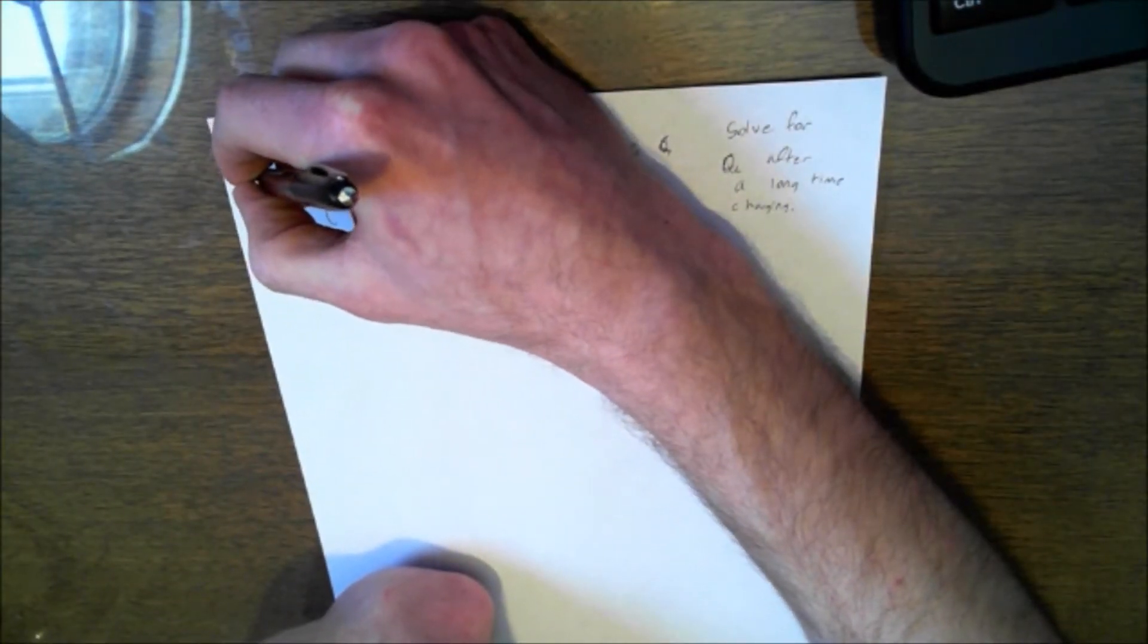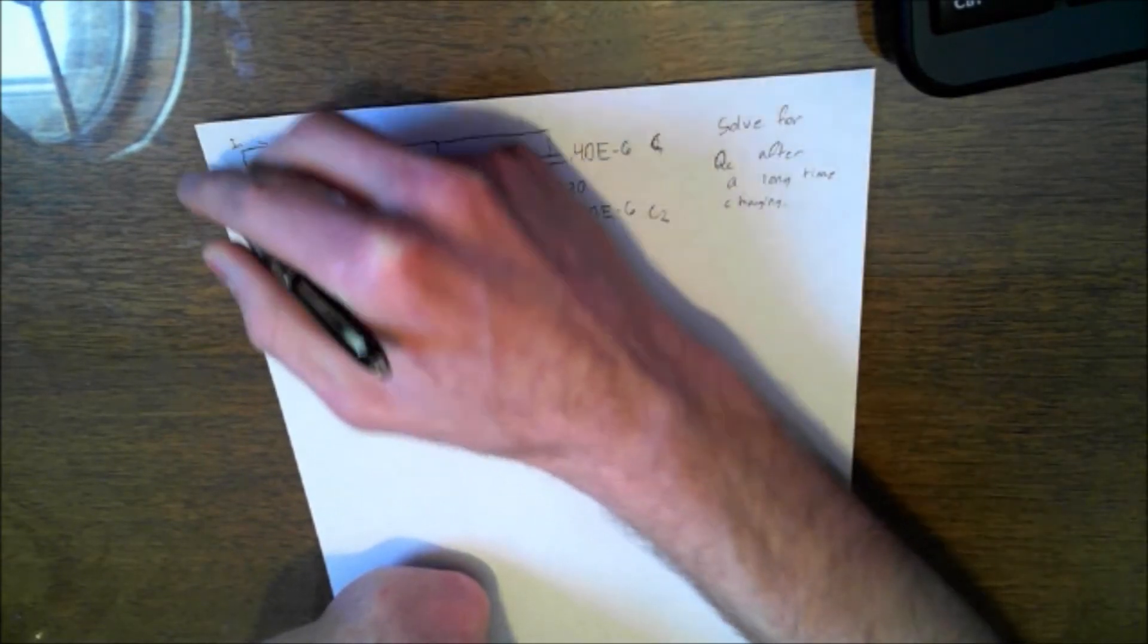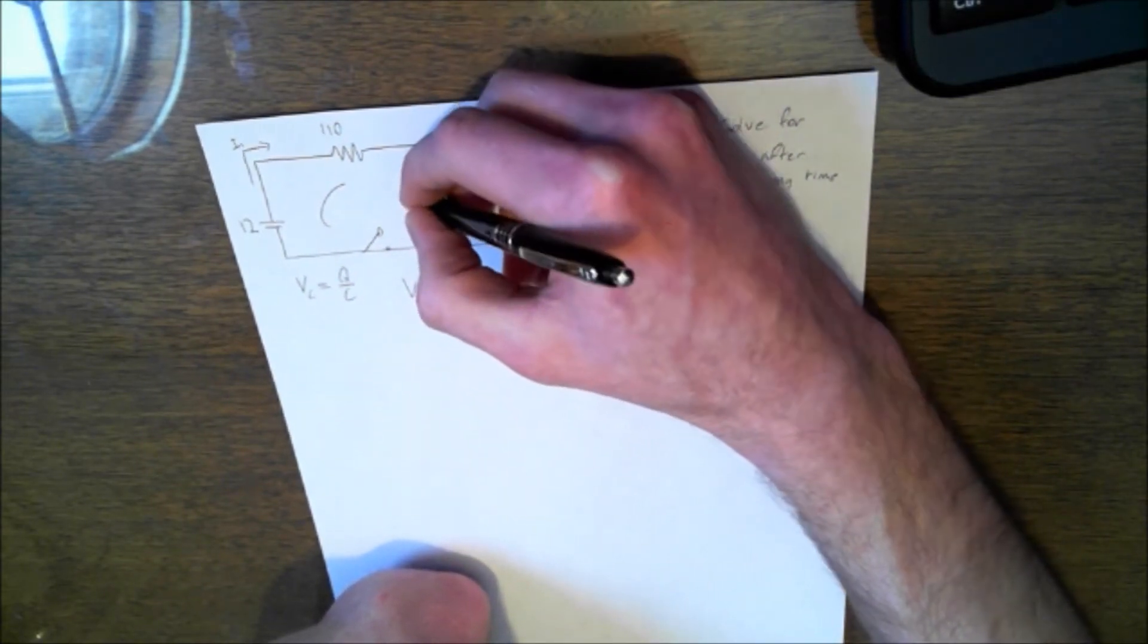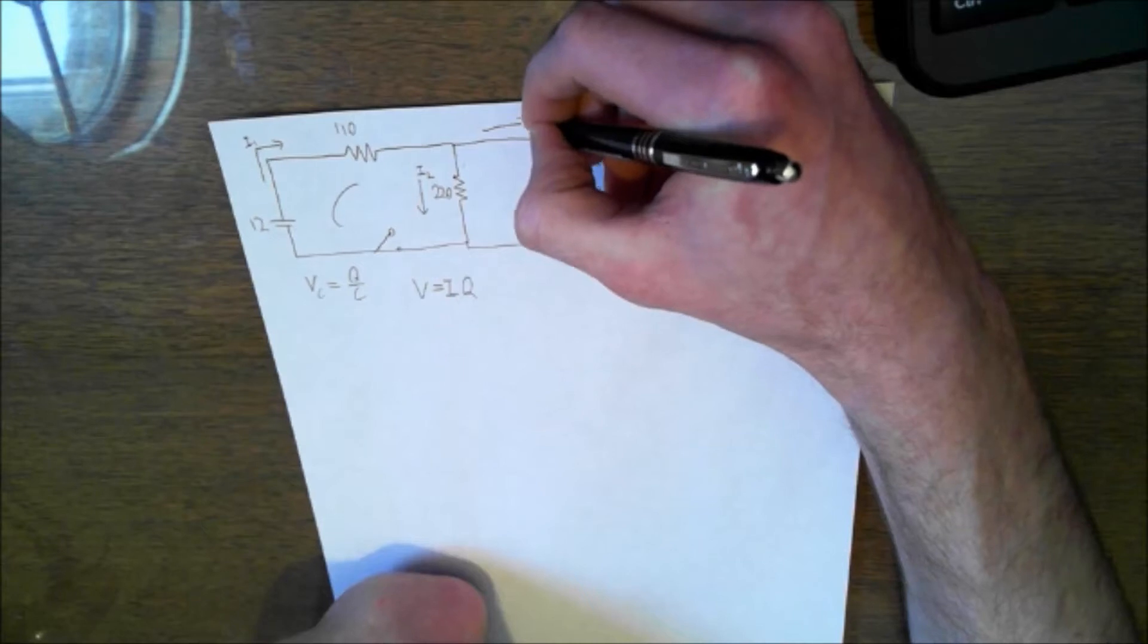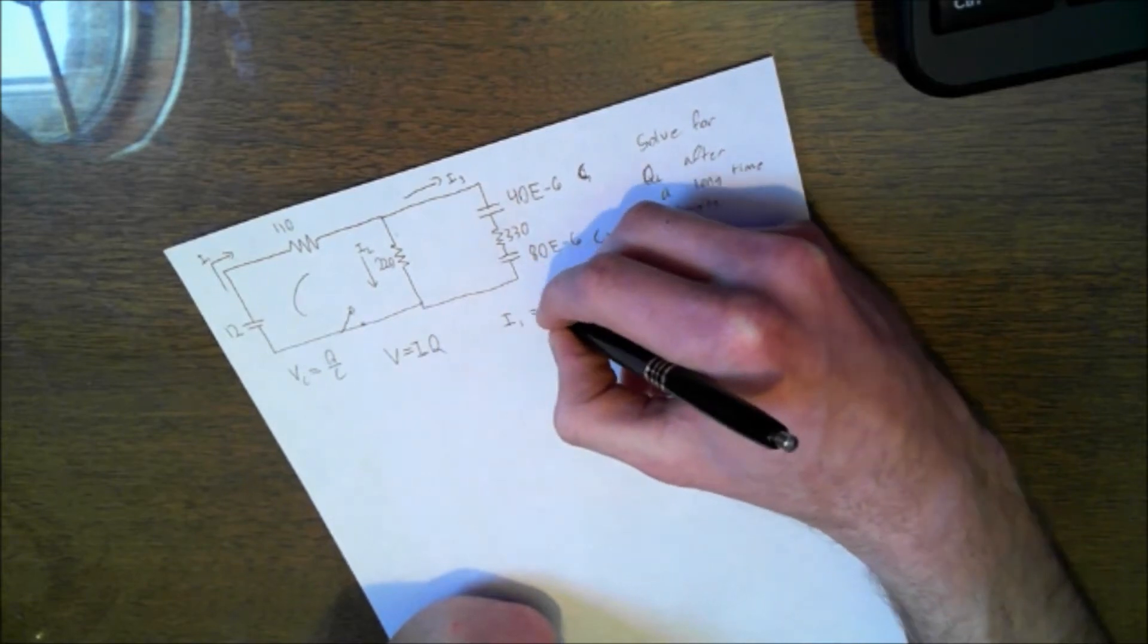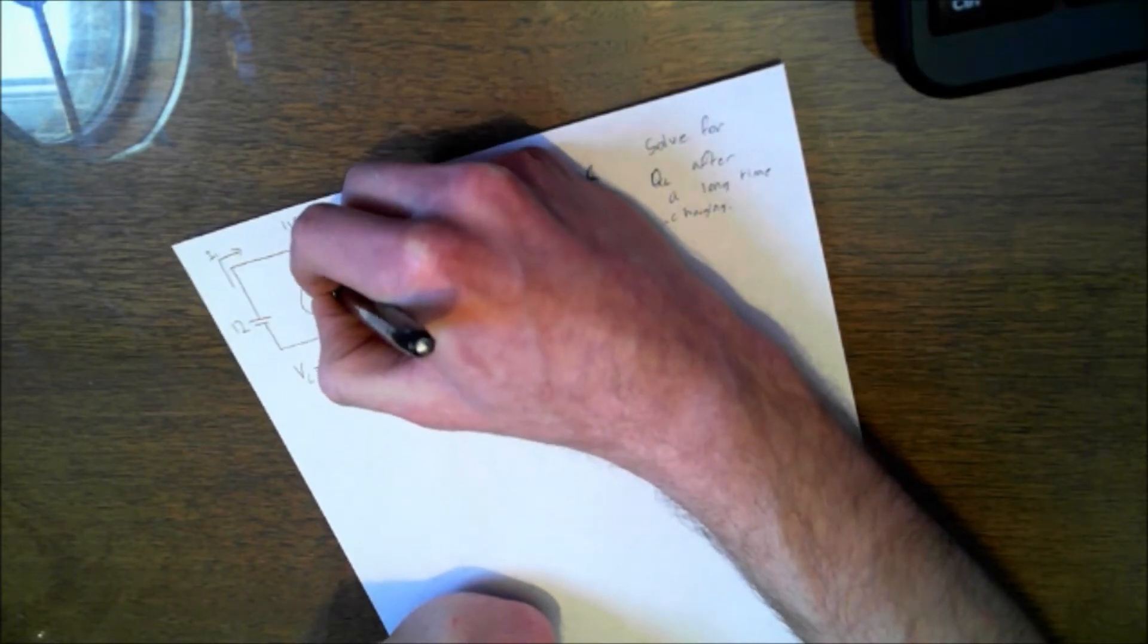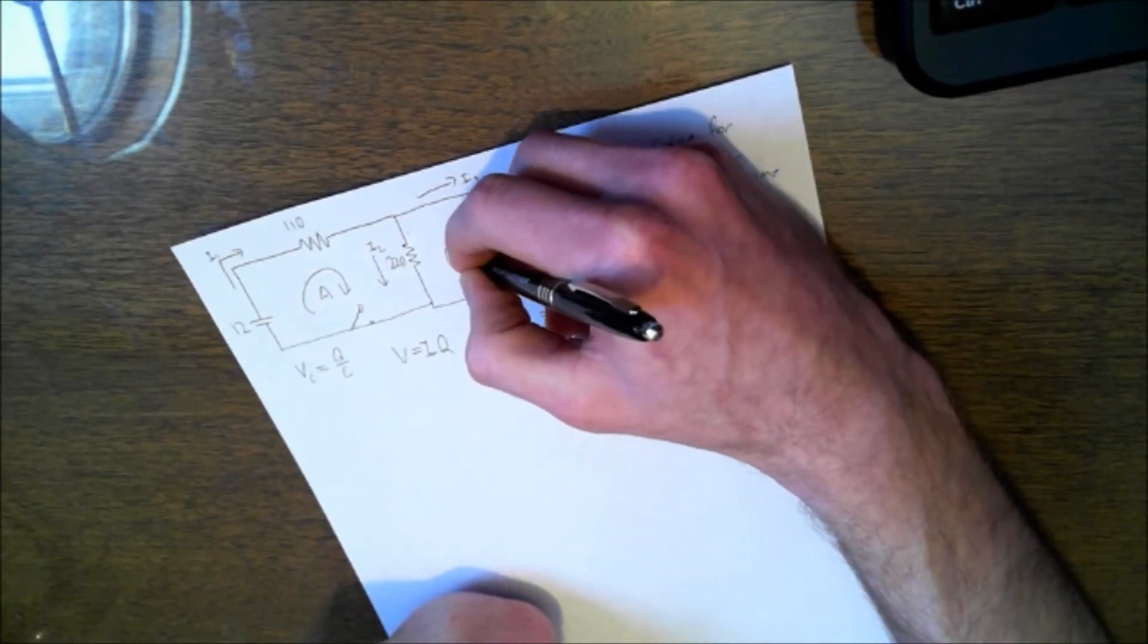So before I actually ignore that, I didn't draw a loop yet. We're going to have two loops. But first, we're going to label our current. So this is going to be I1 because it flows out of the battery. And then we're going to have current flowing into here, into this one. We're going to call that I2. And then it's going to also split off and go into here, and that's going to be I3. And we know that I1 is equal to I2 plus I3.